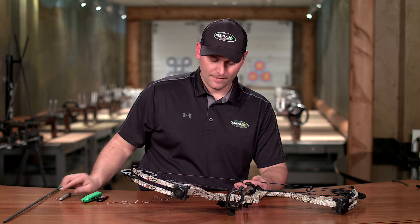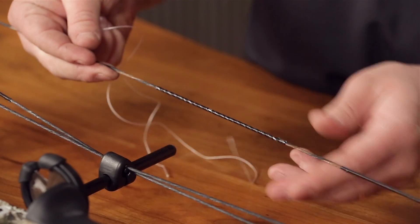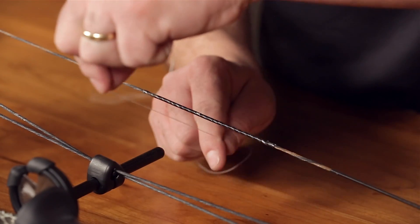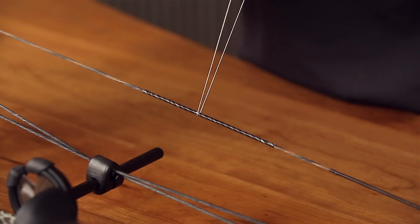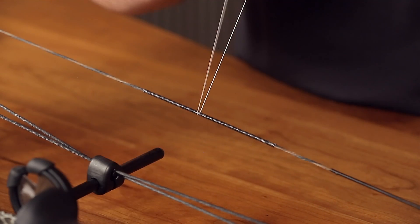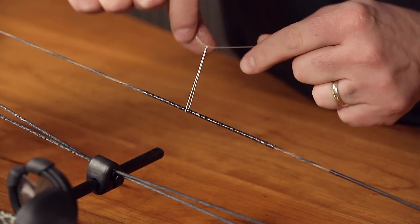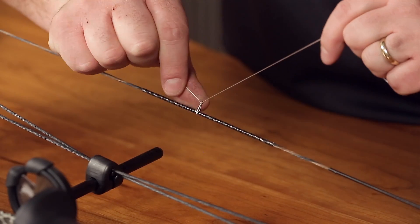At that point, you're going to take your string - you can use serving material or dental floss. Start with a surgeon-style knot and draw it down tight. You can see my string is moving; I'm going to bring it back to my location, 1/16th of an inch high.